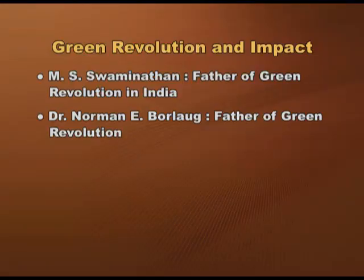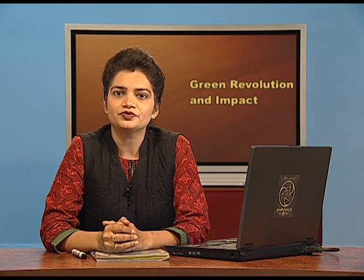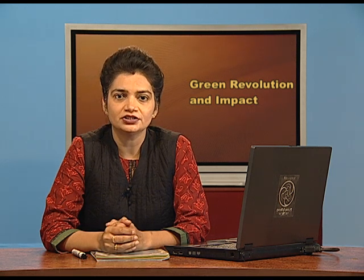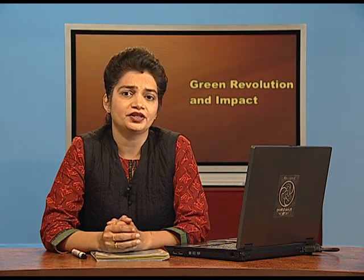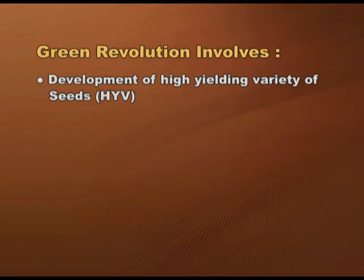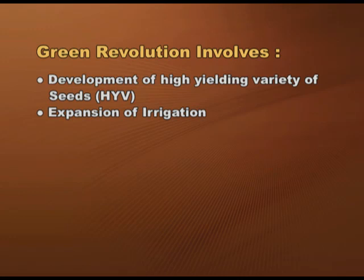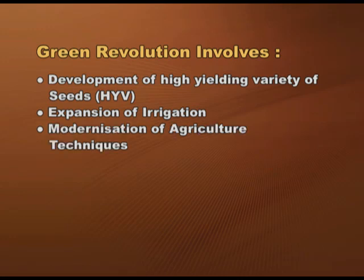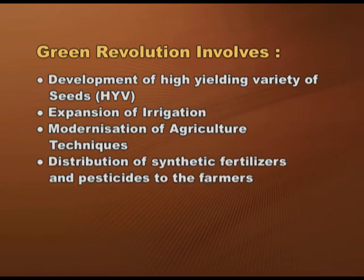M. S. Swaminathan was director of the Indian Agricultural Research Institute in Delhi around the 1960s. You should know that the green revolution was started by Dr. Norman Borlaug in the United States of America. During this time, agriculture was in bad condition in India — per hectare productivity was low, techniques of farming were traditional, and fertilizers were not very effective. The challenge was to improve productivity. The green revolution involved the development of high yielding varieties of seeds, expansion of irrigation, modernization of agricultural techniques, and distribution of synthetic fertilizers and pesticides to farmers.